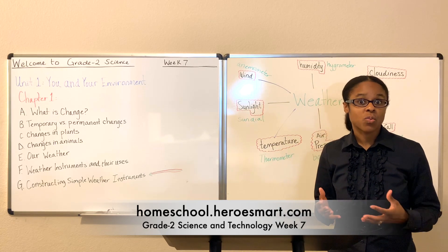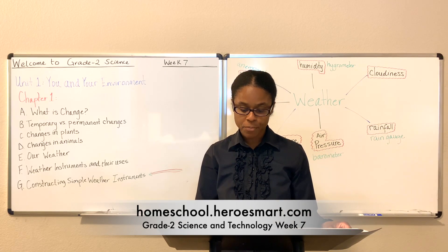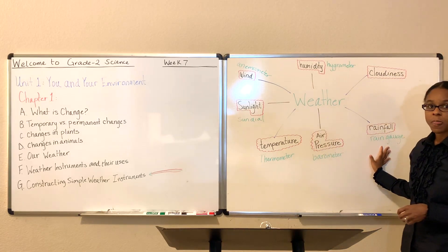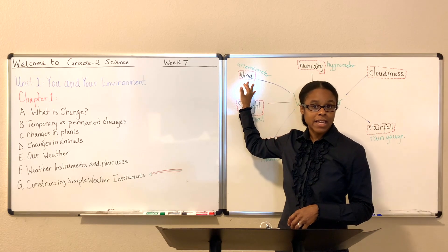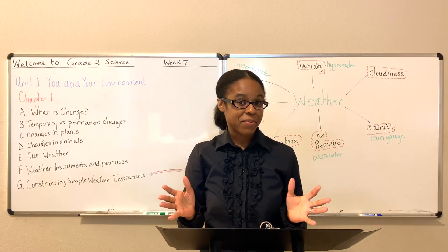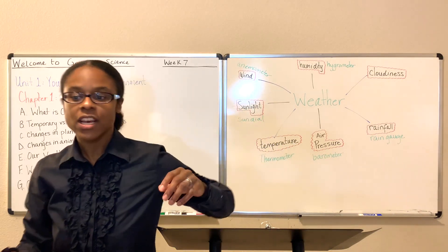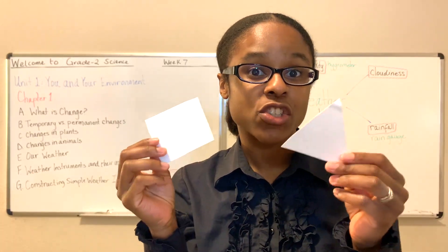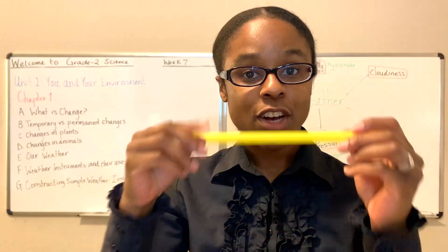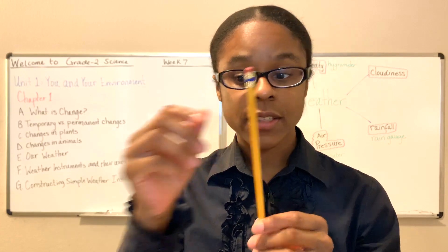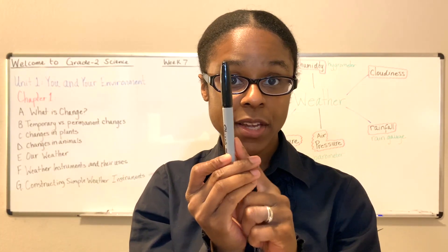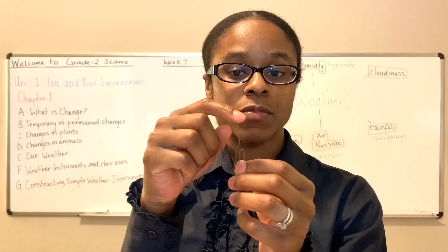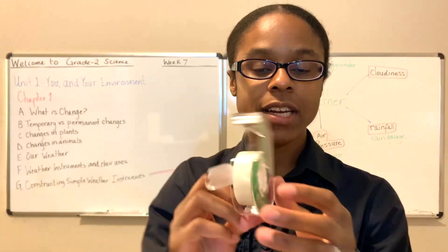Today we're going to talk about just how to construct one. In your workbook, you'll find two types of constructs you can make: the rain gauge, which measures rainfall, and also the wind vane. Today we're going to put it to practice and construct a wind vane. So if you're ready, let me tell you what you'll need: a paper plate, a plastic cup, a square and a triangle cut out of construction paper or some other firm paper, a straw, a pencil with a good eraser, a permanent marker, a safety pin or any sharp pointy pin you may have, and finally some tape.